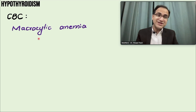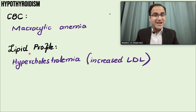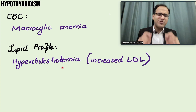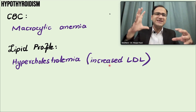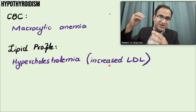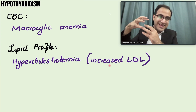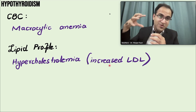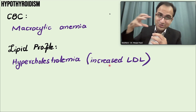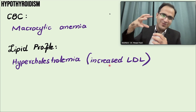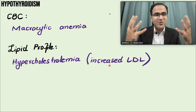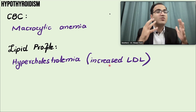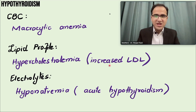CBC shows macrocytic anemia in patients with hypothyroidism. The lipid profile shows hypercholesterolaemia — a very important and commonly tested exam point. LDL levels are increased in hypothyroidism because LDL uptake by the liver depends on LDL receptor expression, which requires thyroid hormones. When thyroid hormones are deficient, LDL receptors are not expressed on the liver, so LDL is not taken up — resulting in elevated blood LDL. This increases the risk of myocardial infarction and cardiovascular disease. Electrolytes may show hyponatraemia in acute hypothyroidism.